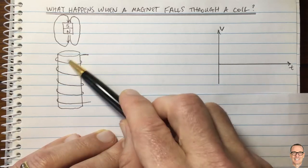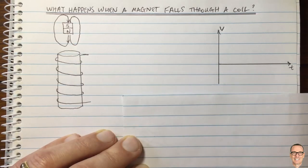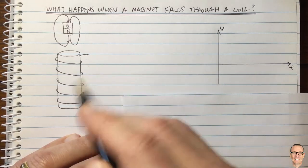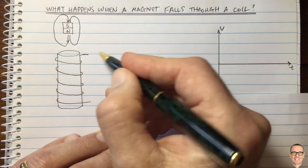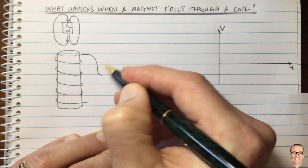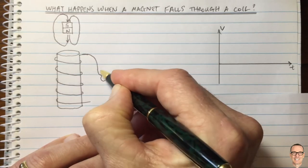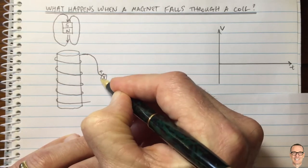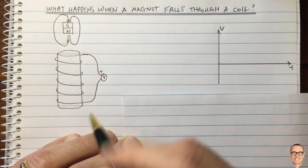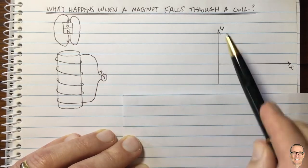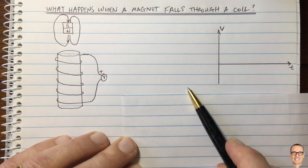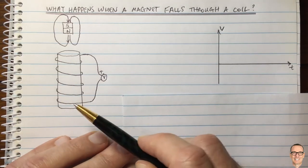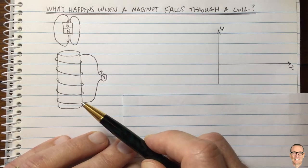So let's understand why that is. Let's think about this case with a coil wrapped the way I've drawn it here. If we measured the voltage across that coil with a voltmeter, which way would the current be flowing, what would the voltage be, and how would we graph that voltage as a function of time? Let's think about that using our right-hand rules of electromagnetism.